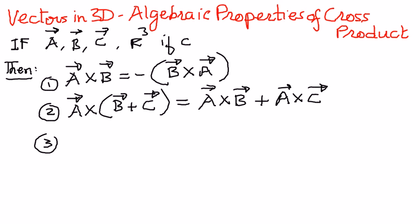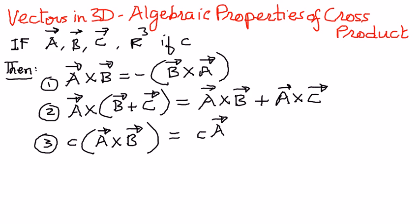The third property tells us that if we have a scalar quantity C and we want to distribute it to vector A cross vector B, we can do it two different ways. One is, we can distribute the constant to vector A, giving (cA) cross vector B. Or we can distribute it to vector B, giving vector A cross (cB). Either way of representing it is correct.